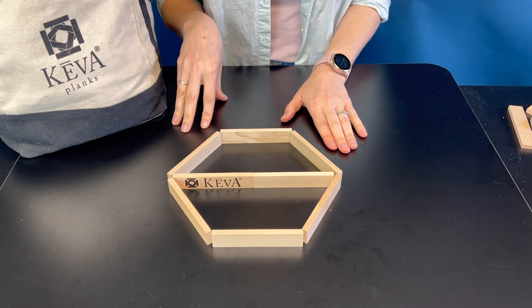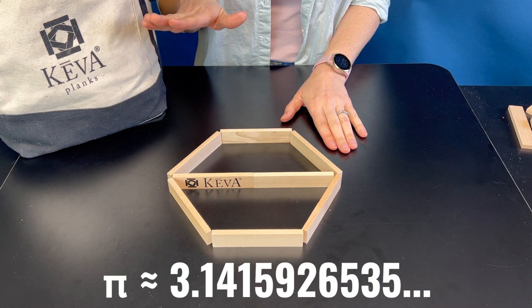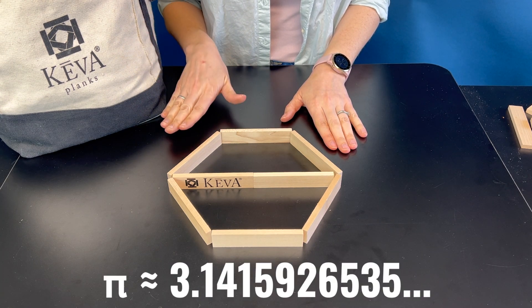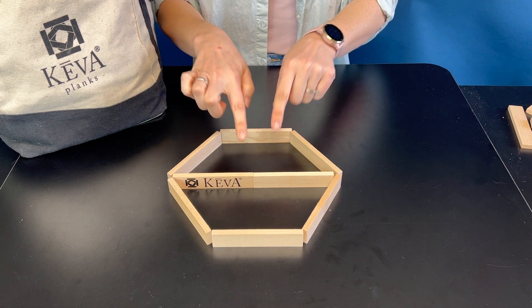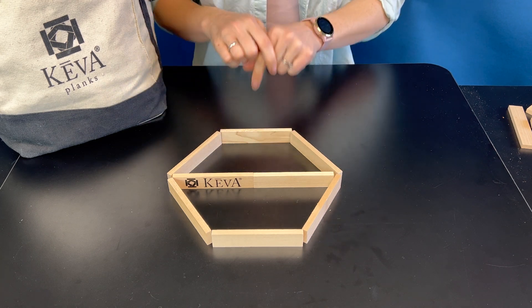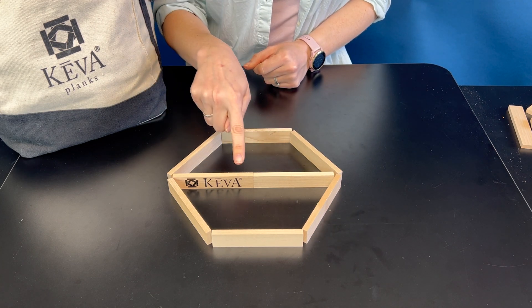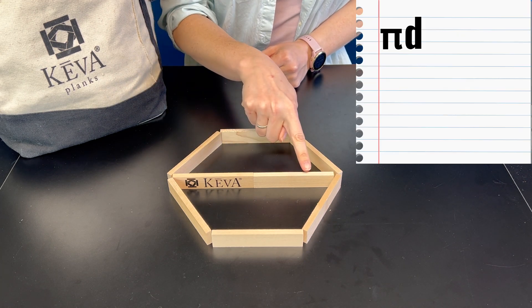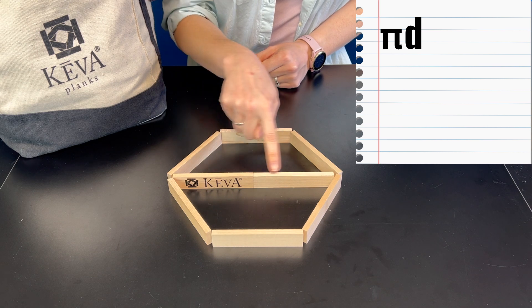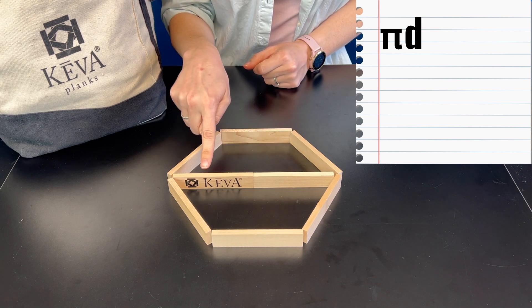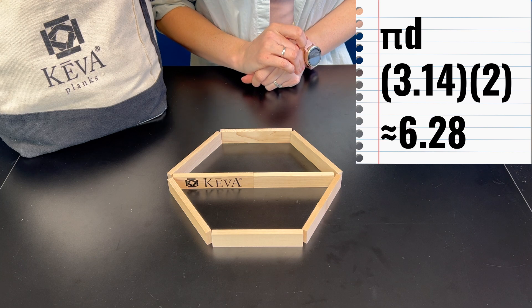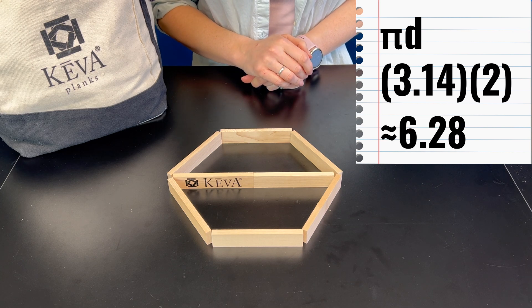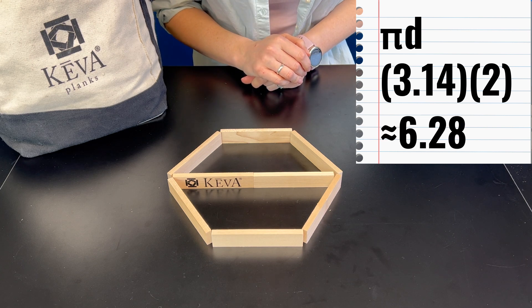We remember that pi is about 3.14. So for our problem here, we're going to use the diameter, which is two planks. So 2 times 3.14 equals 6.28.